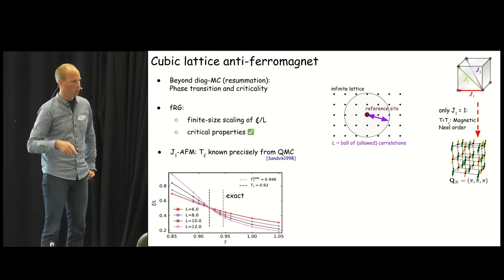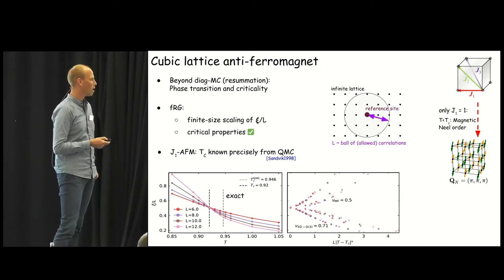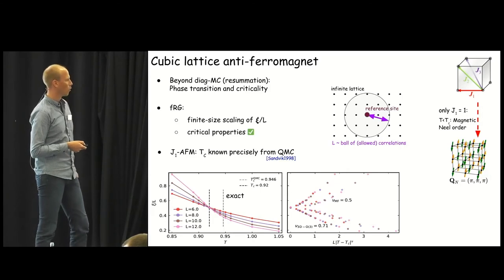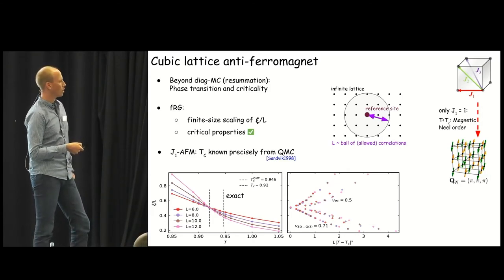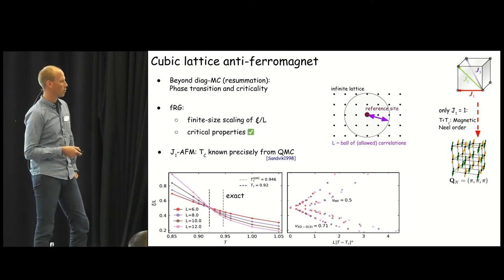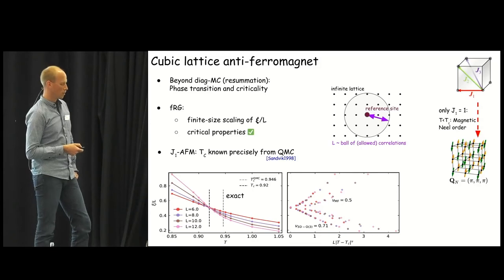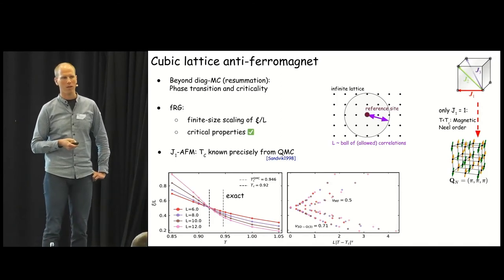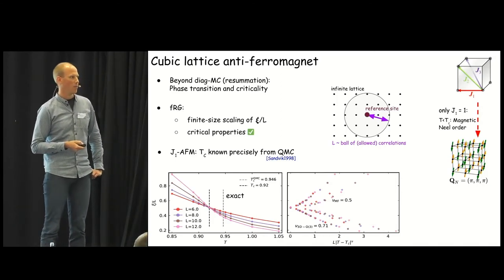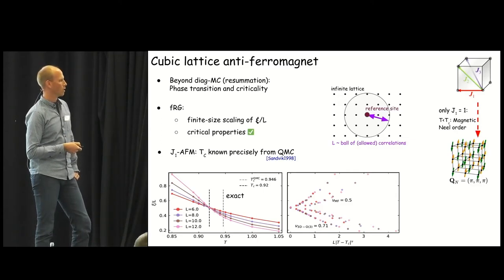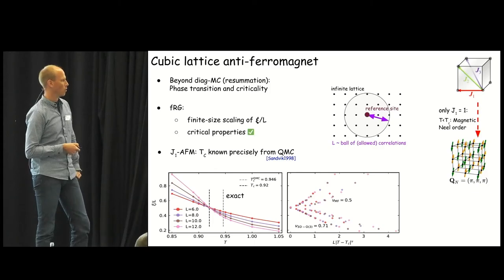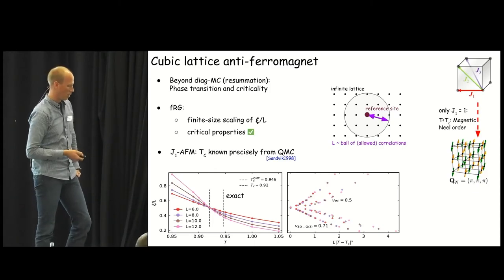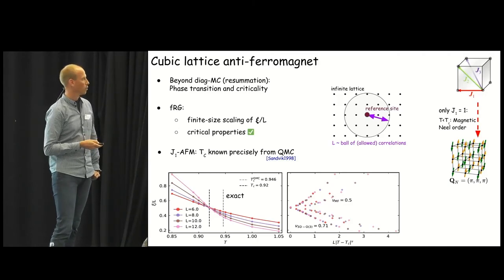What about the critical properties, the critical exponents? We can attempt a scaling collapse of the plot using the well-known classical universal critical exponent of the 3D Heisenberg universality class 0.71, and the dots here show the almost perfect collapse. And this is especially interesting because sometimes the FRG is criticized to be essentially mean field theory. So, we can refute this criticism here because the collapse for the mean field critical exponents here 0.5 looks considerably worse. So, we seem to capture this non-trivial universality at the phase transition.